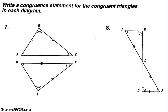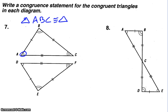When we have to list our own congruent statements, we have to list corresponding parts and look at the letters. We can start with any letter we want. For example, in number 7, I'm going to start with angle A. So I'll say triangle ABC is congruent to... the second triangle must follow so that corresponding parts match. A is corresponding to D, B is corresponding to E, and then F. So the corresponding parts would be in corresponding locations.